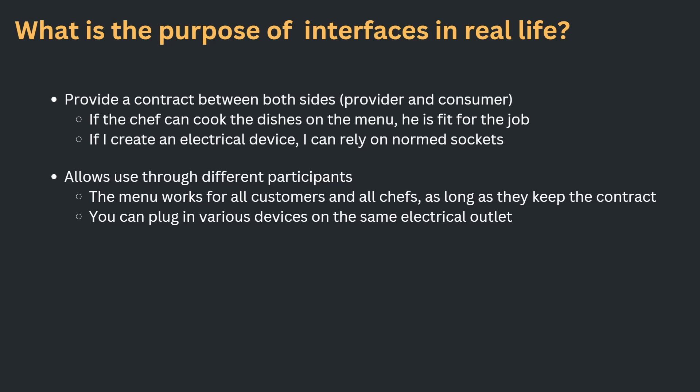Interfaces allow use through different participants. The menu works for all customers on the one side and all chefs on the other side, as long as they keep the contract that we just discussed. So you can have multiple chefs — if they all can cook butter chicken as it is described on the menu, you're fine. Also you can give every customer the same menu because they all know how to use a menu. And of course, very similar with plugs and sockets, you can plug in various devices on the same electrical outlet, and you can also plug in the same device on multiple electrical outlets.